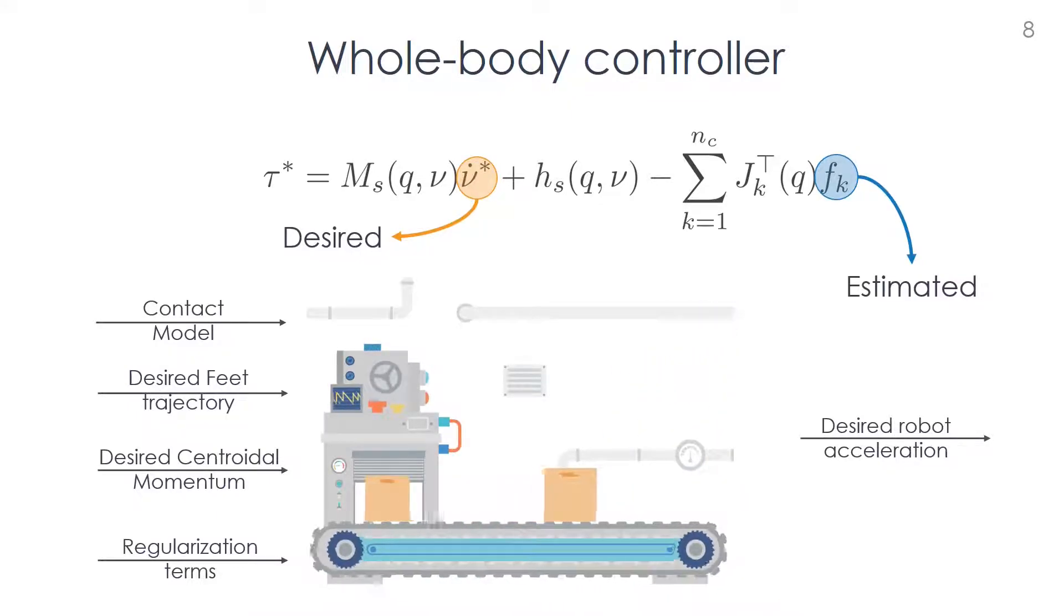The control objective is achieved by framing the problem as a constrained optimization problem, where the low priority tasks are embedded in the cost function, while the high priority tasks are treated as constraints.